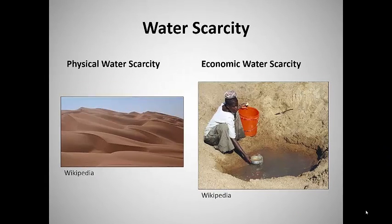What is water scarcity? It's both a natural and a human-made phenomenon. There's enough fresh water on the planet for 7 billion people, but it's distributed unevenly and too much of it is wasted, polluted, and unsustainably managed. Accordingly, there are two types of water scarcity: physical or absolute water scarcity, and economic water scarcity. Physical water scarcity is a result of inadequate natural water resources to supply a region's demand, and economic water scarcity is a result of poor management of available water resources that might be sufficient if managed properly.